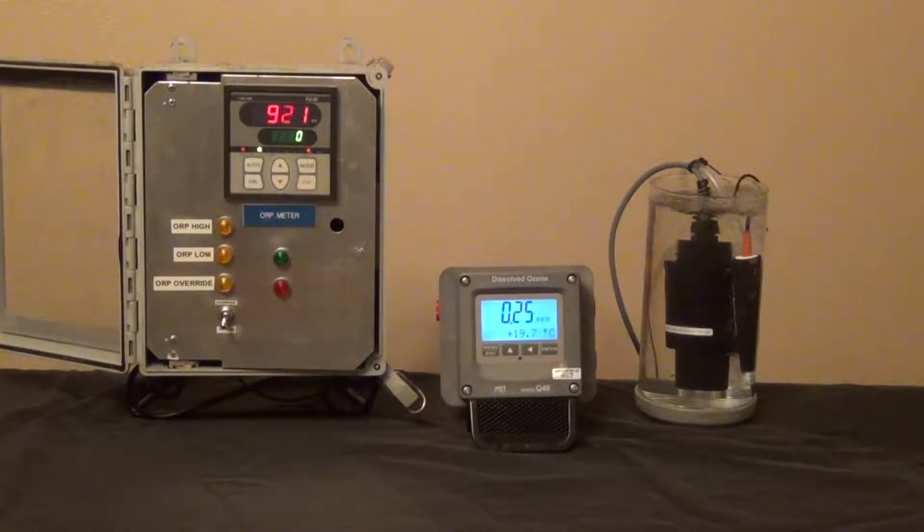As you can see, the levels have stabilized on the ORP monitor at around 920. The dissolved ozone level looks like it's stabilized at around 0.25 parts per million.